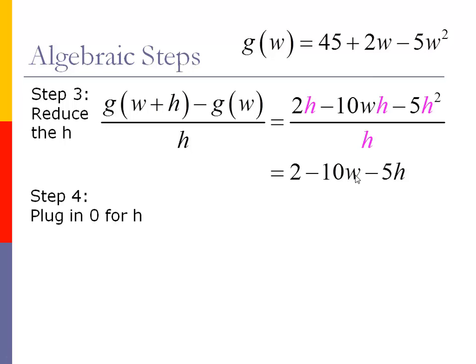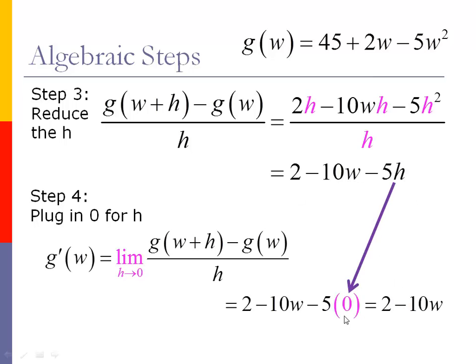Step number four is now taking the limit, basically plugging in zero for our h. When we plug zero for the h, that last term goes away, and we're left with 2 minus 10w. And this would be the derivative, this would be the formula for the slope of the tangent. We can use this formula to calculate the slope of the tangent on that original formula of g(w), that's 45 plus 2w minus 5w squared. This formula will actually calculate the slope on any point on that graph.